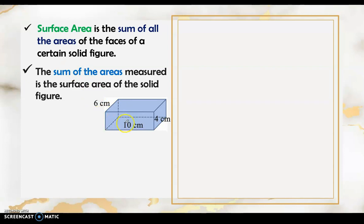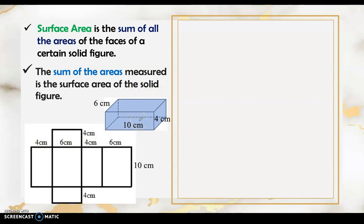For example, find the surface area of this rectangular prism that measures 10 centimeters long, 6 centimeters wide, and 4 centimeters tall. To find the surface area, we need to get the area of each face. It is easier to visualize if we make a net of this prism.